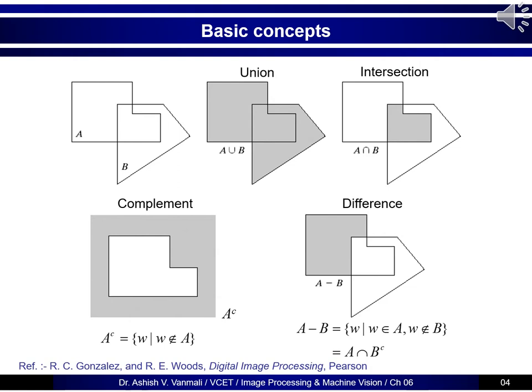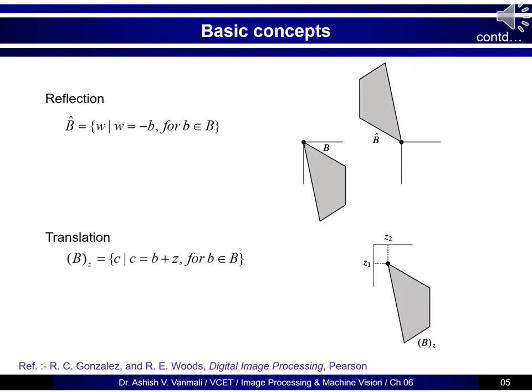The complement of A, denoted as A complement, is all pixels W such that W does not belong to A — simply all pixels outside component A. The difference A minus B is all pixels W such that W belongs to A but not to B, which we can also write as A intersection B complement. Apart from these four basic operations, there are two specific operations related to morphology: reflection and translation.